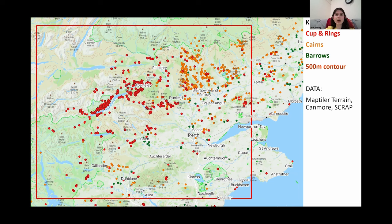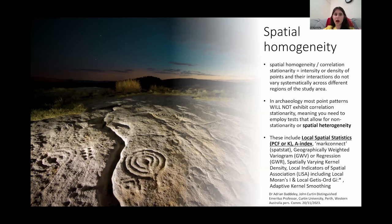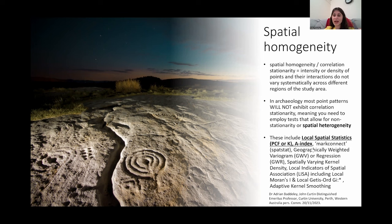Now just take a look at the points and note how they appear to be distributed. Before running tests in R I had to assess whether my point patterns adhered to spatial homogeneity and correlation stationarity, which is a complicated way of asking: does the density of the points stay the same across the study area? In archaeology most point patterns will not exhibit correlation stationarity, meaning you can only employ certain specific tests. I have painstakingly compiled a list of the relevant tests on screen and the ones I chose based on Keren's PhD are bolded, but which test you use is entirely dependent on the study area, your research question, and a whole bunch of other factors.